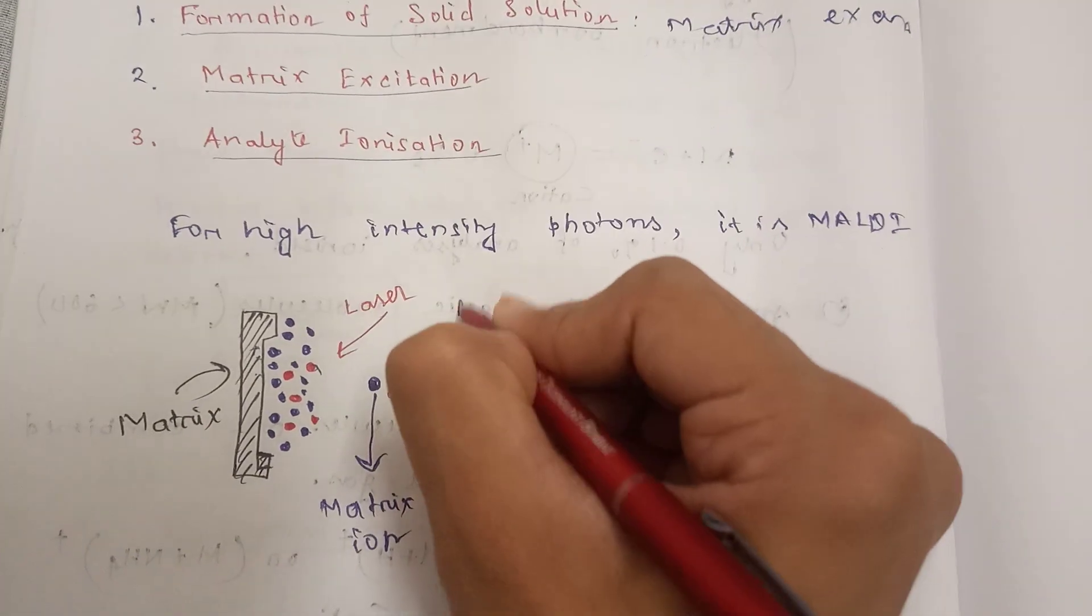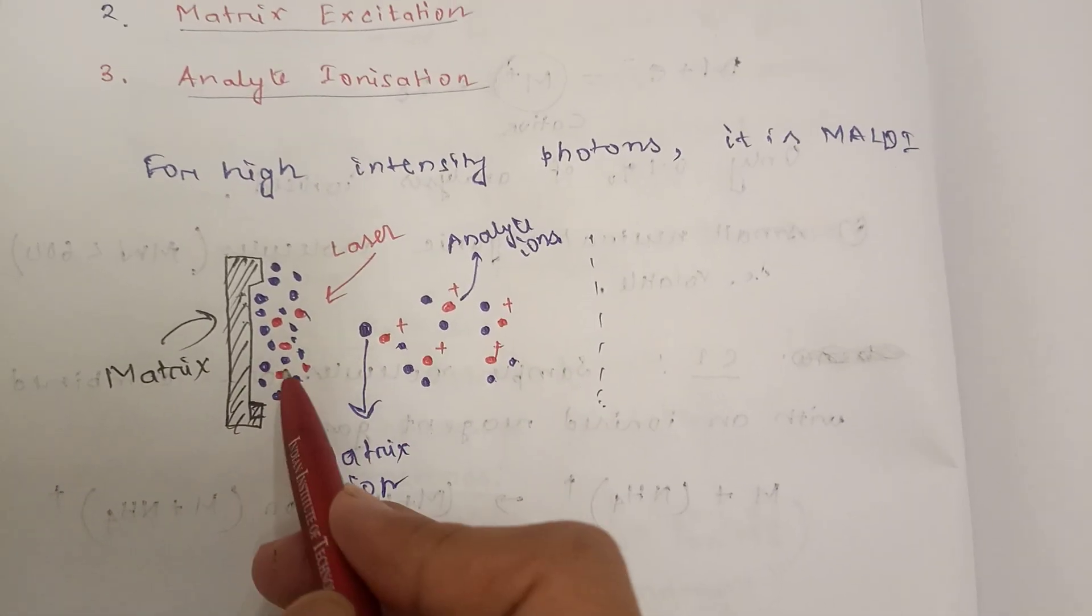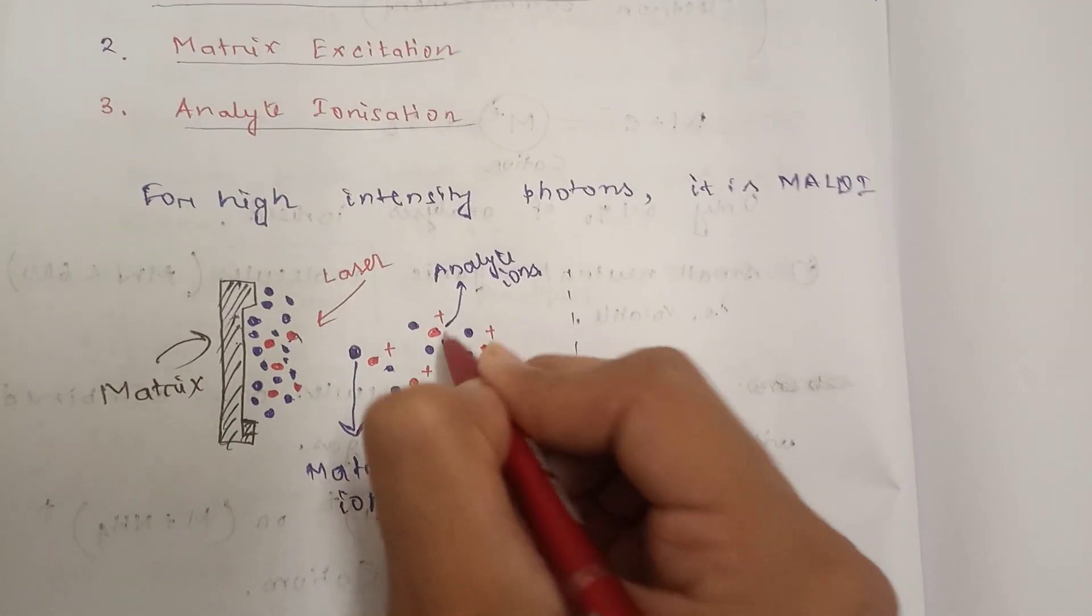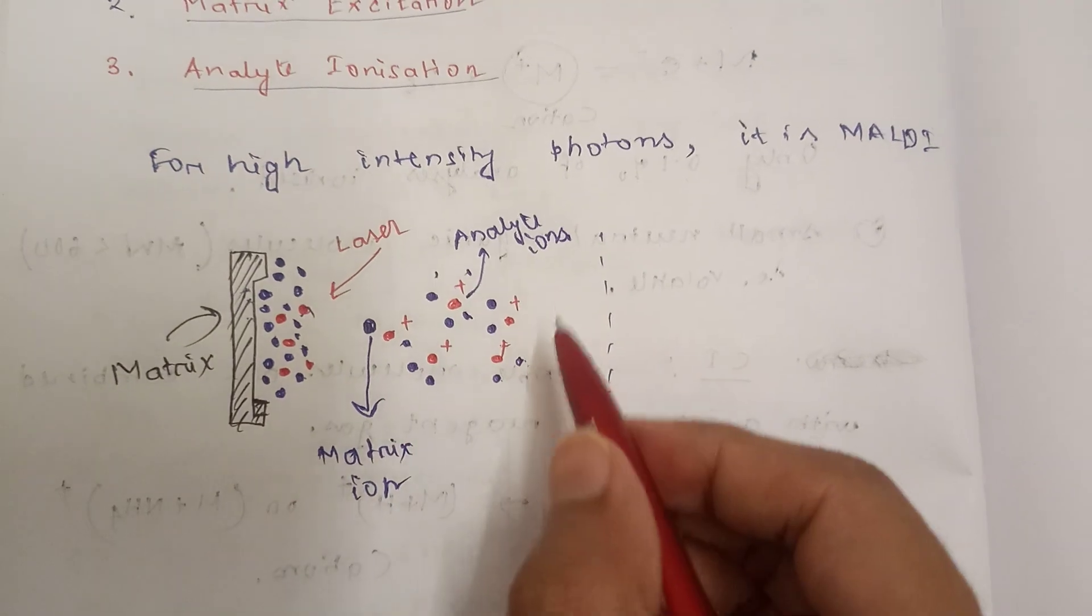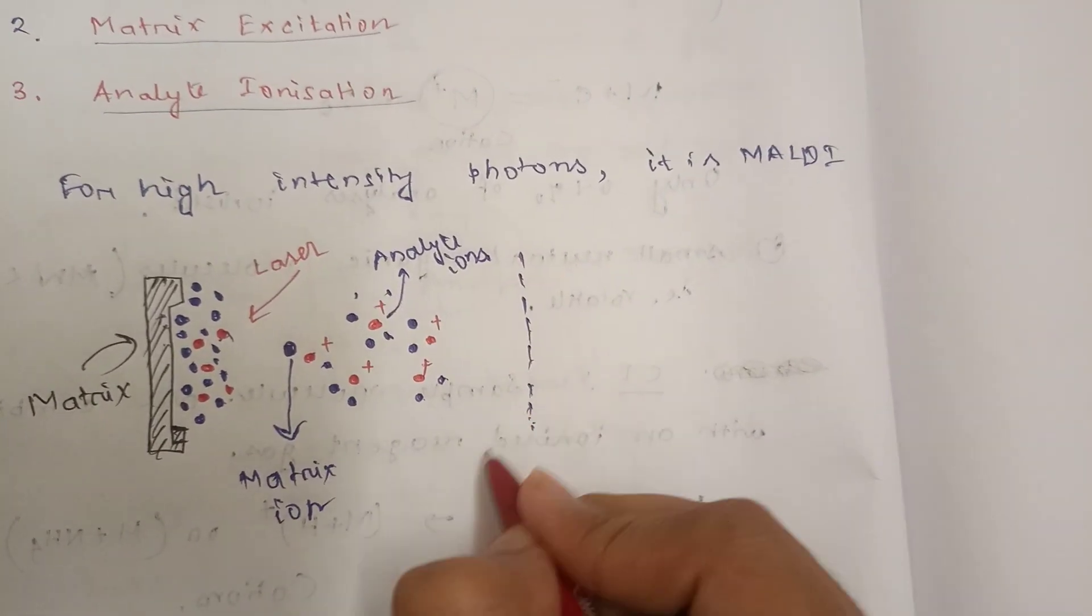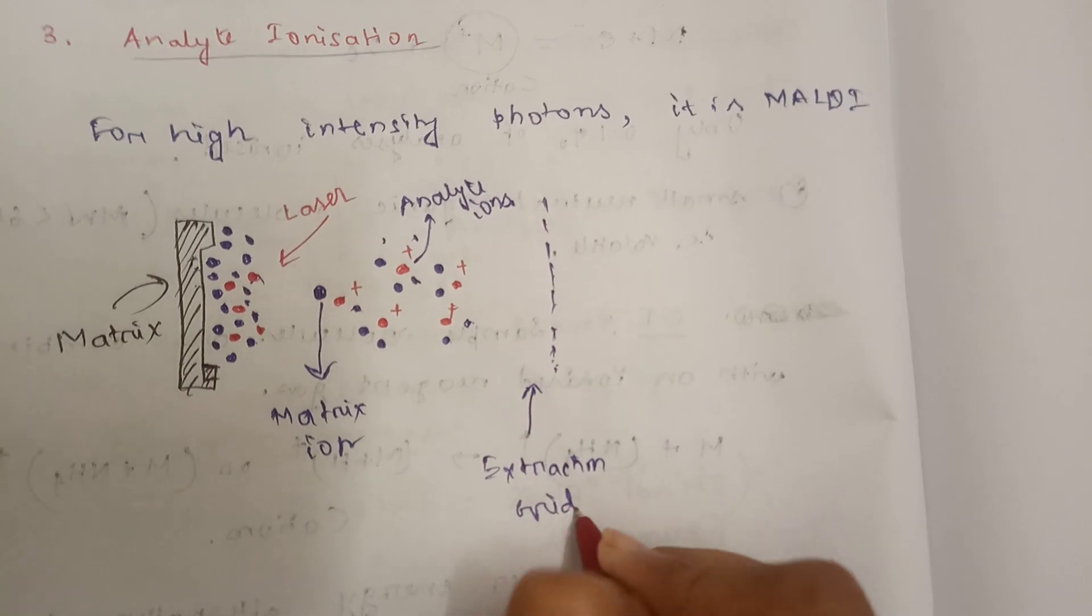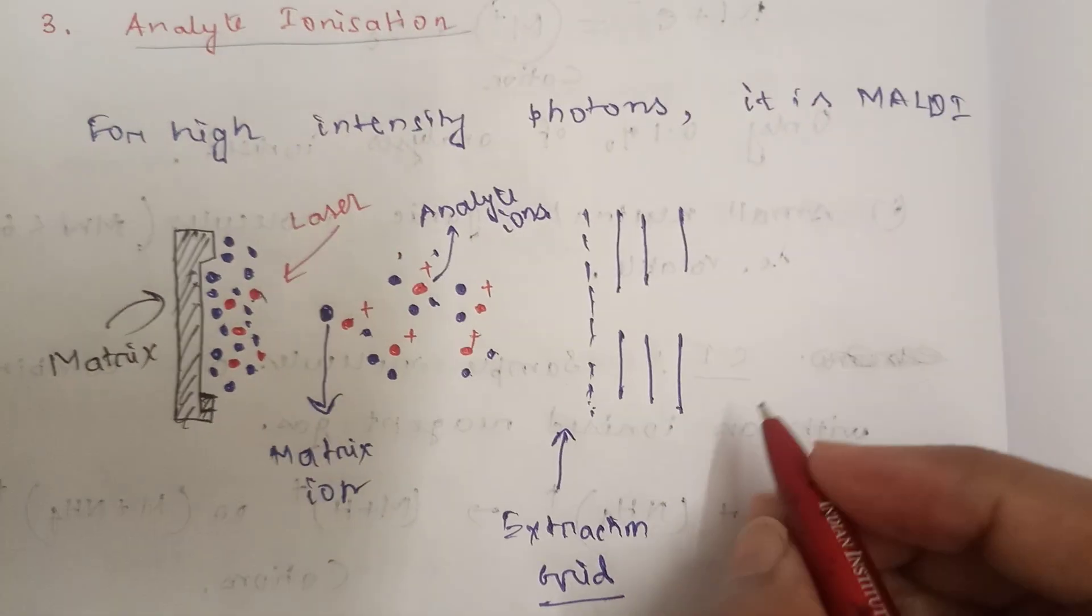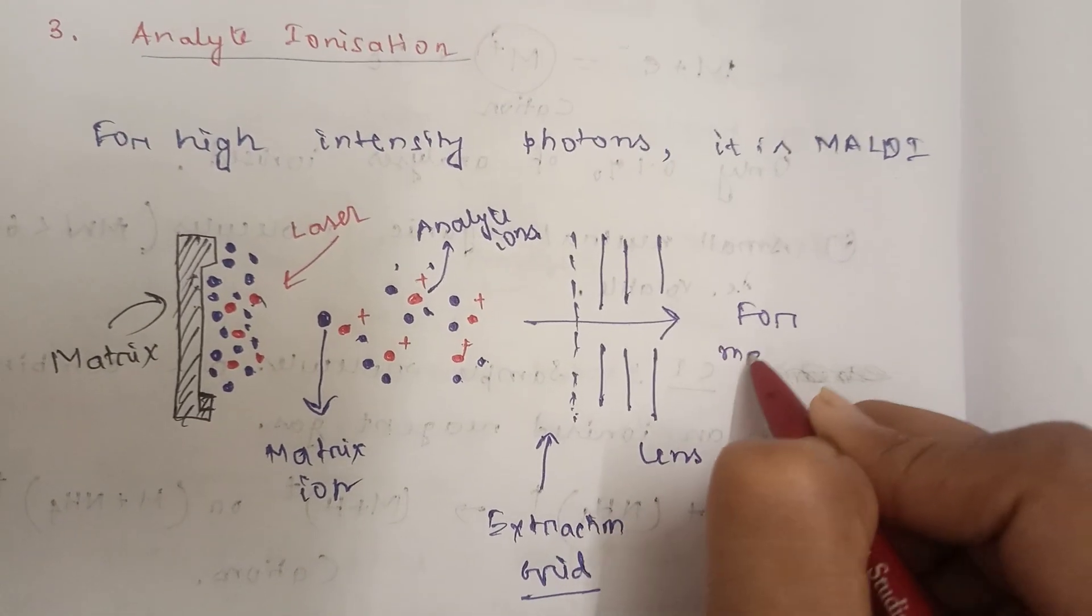These clusters ejected from the surface consist of analyte molecules surrounded by the matrix and salt ions. The matrix molecules evaporate away from the clusters to leave the free analyte in gas phase. Here you can see there is an extraction grid, then there will be some focusing lens, and then it will pass for mass spectrometer.